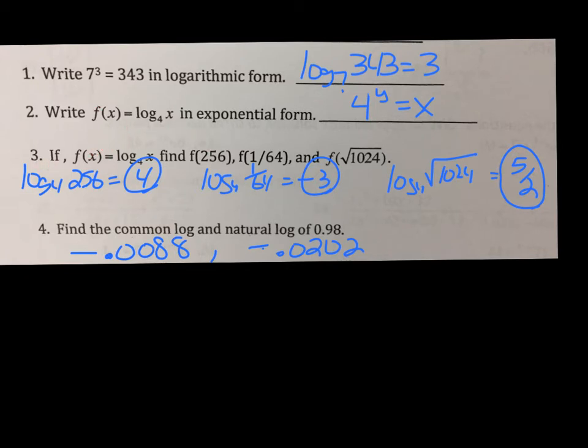Number 3, plug in 256. Log base 4, 256. Plug in the 1/64th. Plug in the square root of 1024. This answer is 4 because 4 to the 4th is 256. This one, because 1/64th is flipped, it's going to be negative 3. And this one, 4 to the 5th power is 1024. But because it's the square root, it's over 2. Remember, bottom is the root. Number 4, common log is base 10. Natural log is base e. Just punch your calculator.